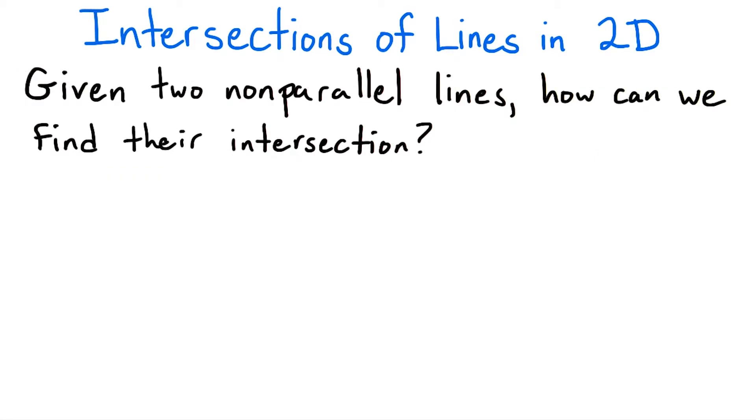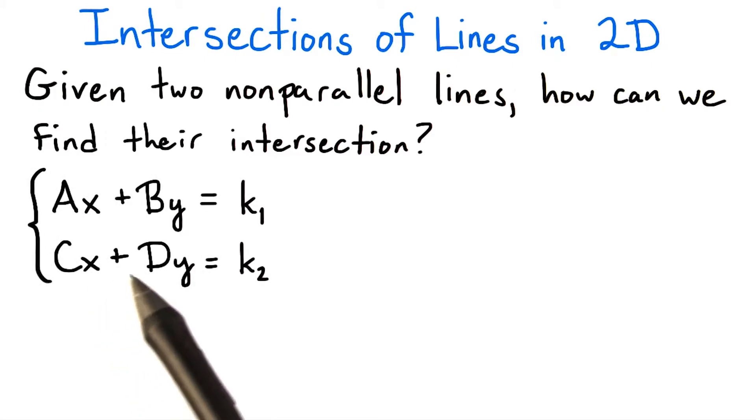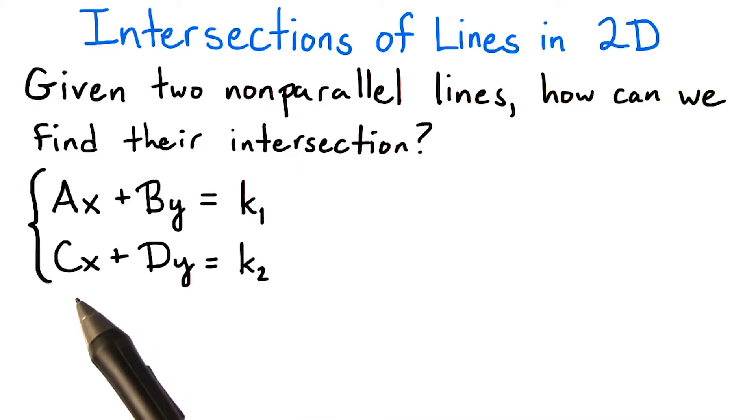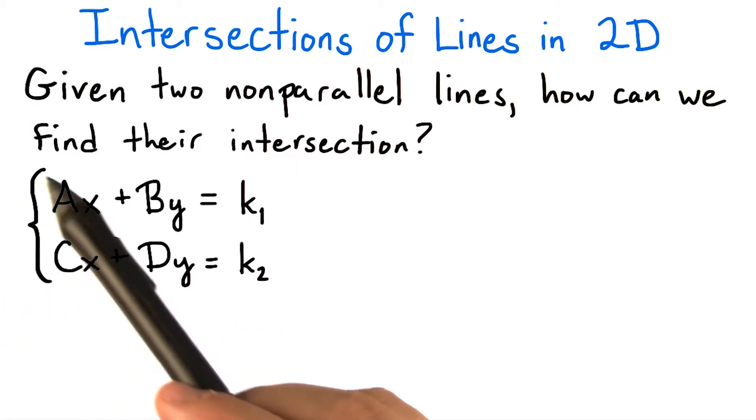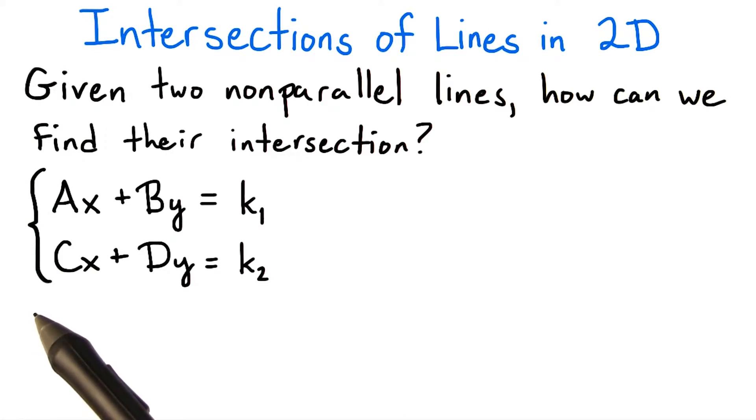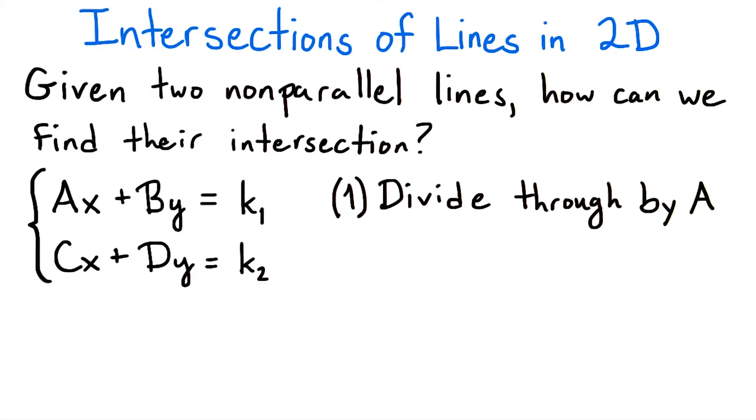Okay, now let's suppose we have two non-parallel lines, so we know they will intersect. How do we find their intersection point? Let's write the lines in their standard forms. ax plus by equals k1, and cx plus dy equals k2. I write this left curly brace to indicate that this is a system of simultaneous linear equations. So, how do we go about solving this system?